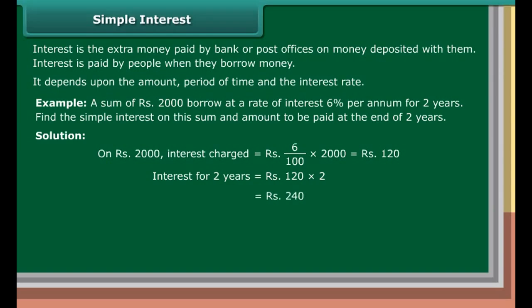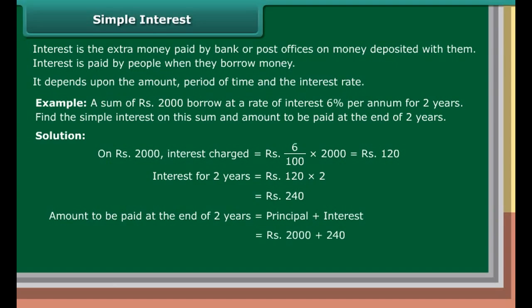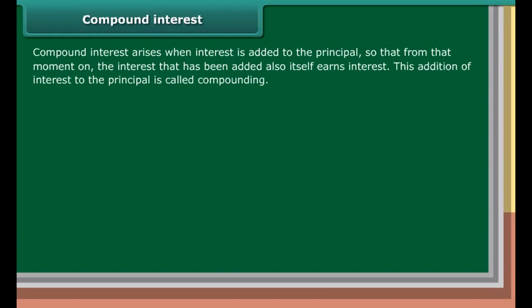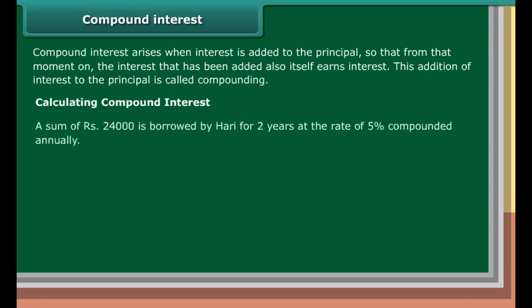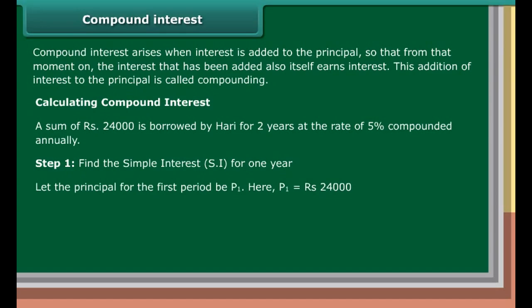Simple interest. Interest is the extra money paid by banks or post offices on money deposited with them. Interest is also paid by people when they borrow money. It depends upon the amount, period of time, and the interest rate. Example: A sum of rupees 2,000 borrowed at rate of interest 6% per annum for 2 years. Solution: On rupees 2,000, interest charged equals 6 upon 100 into 2,000, which is rupees 120. Interest for 2 years equals rupees 120 into 2, which is rupees 240. Amount to be paid at the end of 2 years equals principal plus interest, which is rupees 2,000 plus 240, which is equal to rupees 2,240.